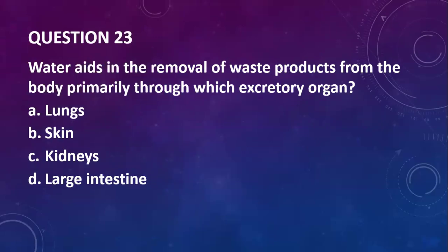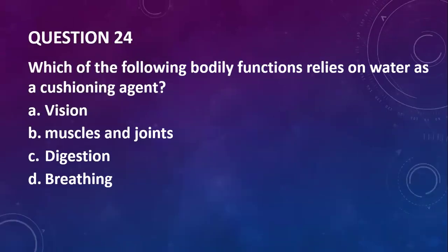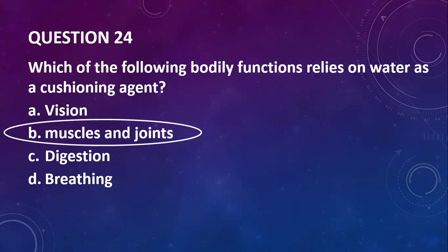Question twenty-three: water aids in the removal of waste products from the body, primarily through which excretory organs? The kidneys are responsible for creating urine, which is full of waste products in the body. Question twenty-four: which bodily function relies on water as a cushioning agent? It's the muscles and joints.